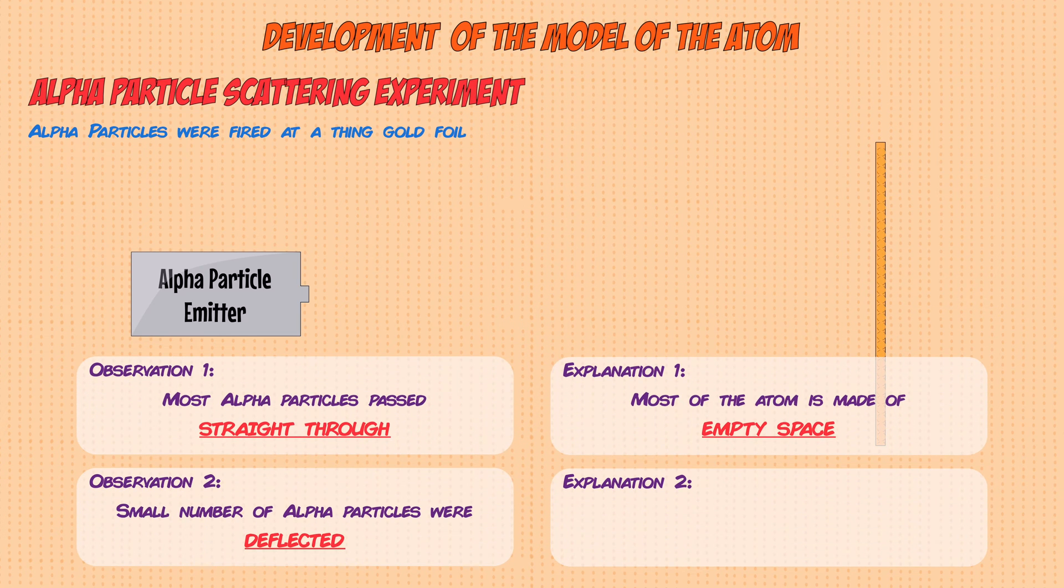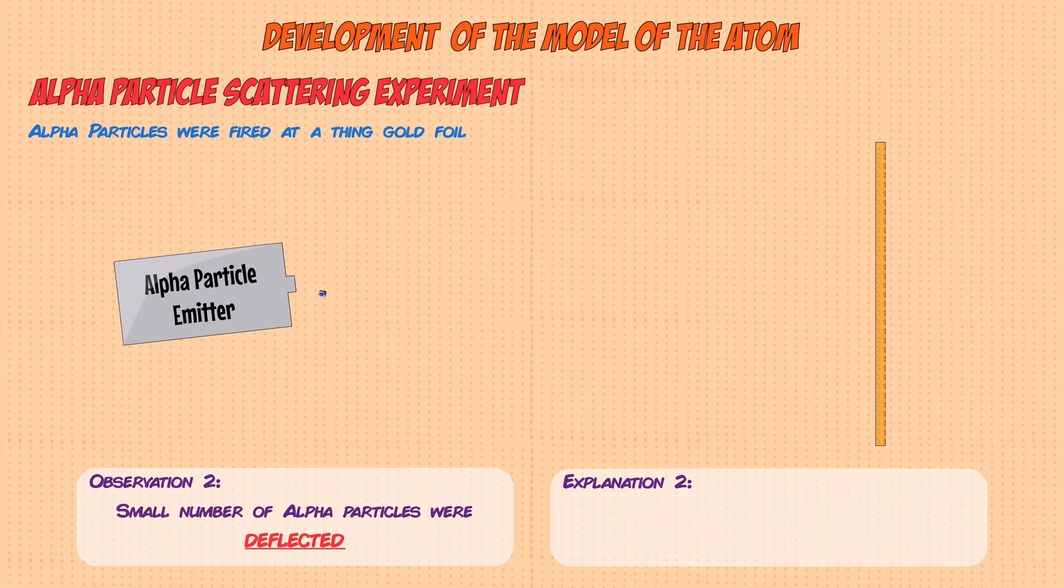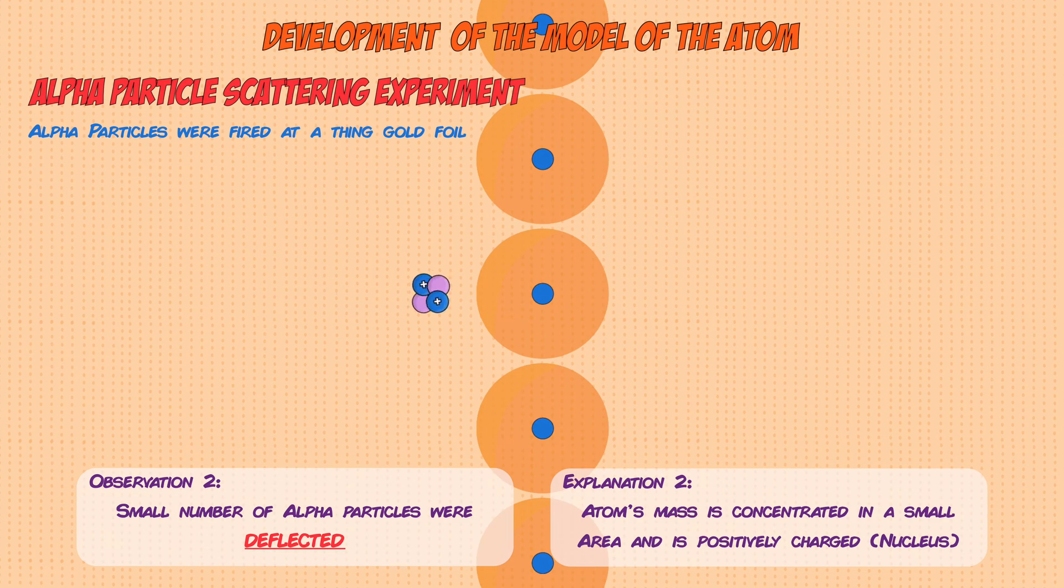A small percentage of the alpha particles, however, were deflected in different directions. Some were deflected a little and others were deflected more. This showed him that the reason for these deflections was because the atom's mass is concentrated in a small area at its center.